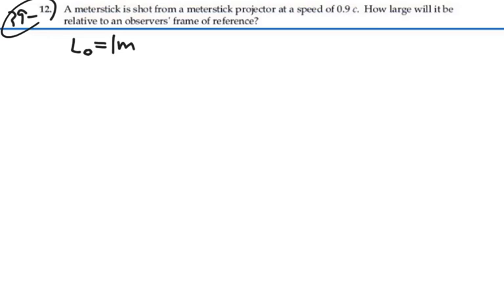Anybody else who is observing this meter stick is moving with respect to the meter stick, and the meter stick is moving with respect to them. So the length they observe will be contracted by gamma. So the observed length will be L, where it's L₀ divided by gamma.